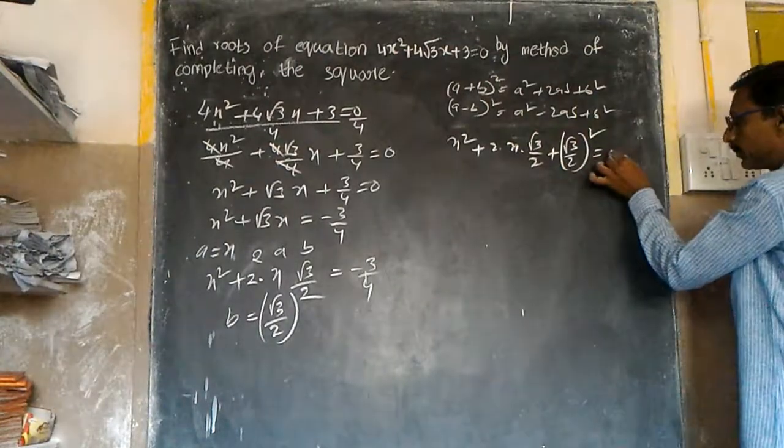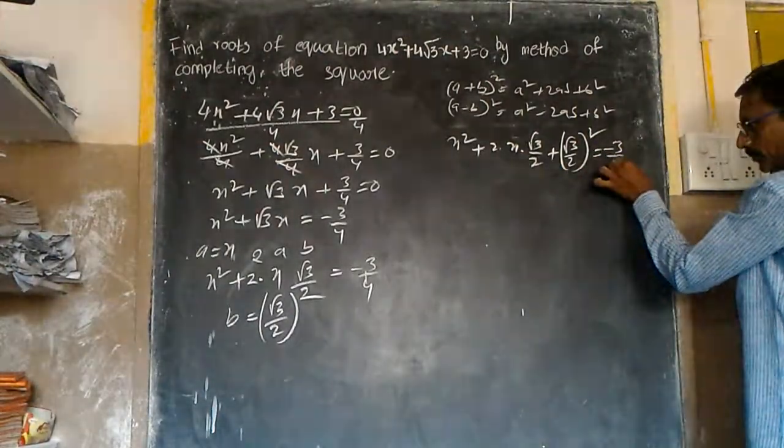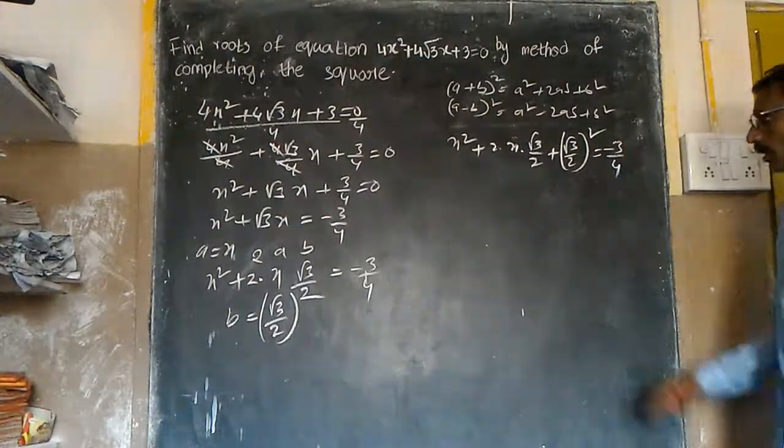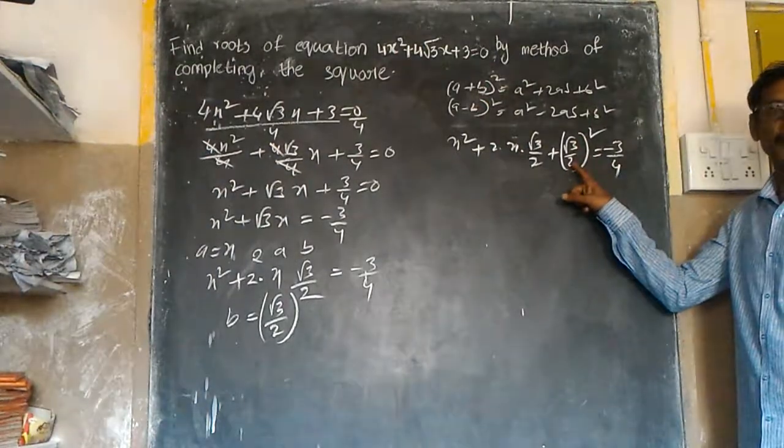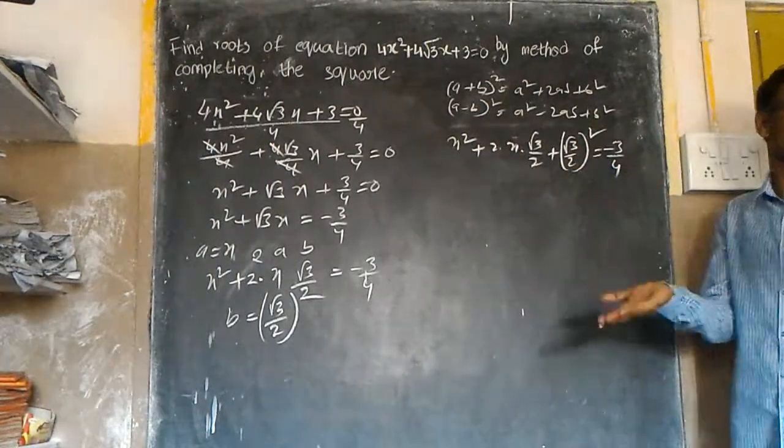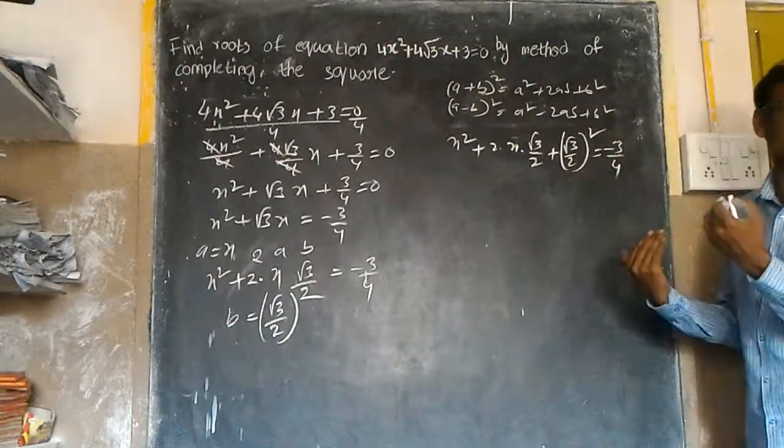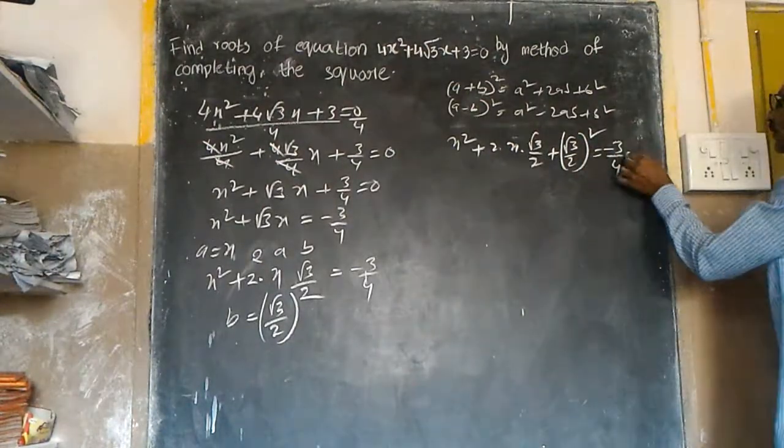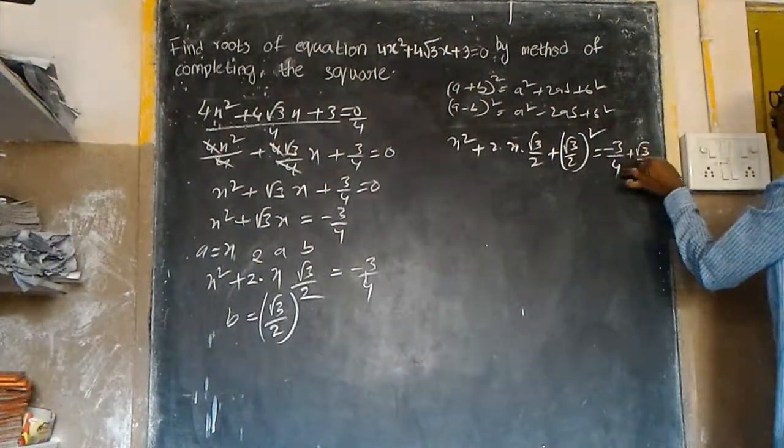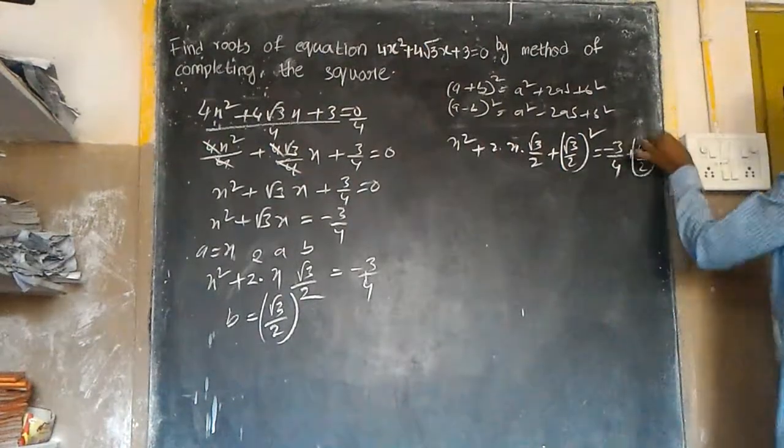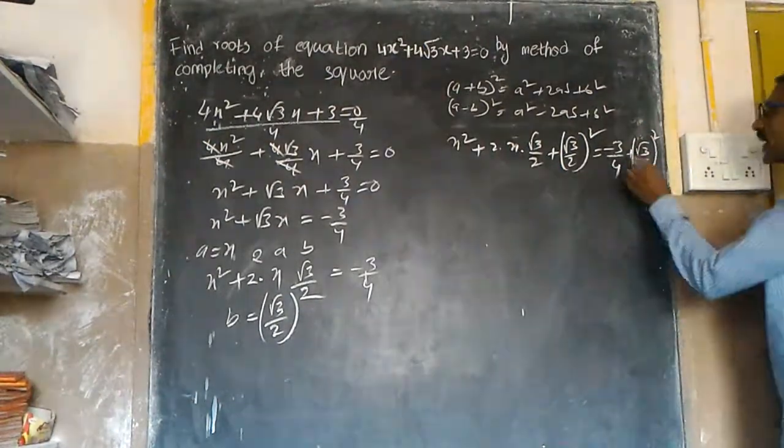On the right side we already have -3/4. Now we add (√3/2)². Squaring √3 gives 3, squaring 2 gives 4, so we get 3/4.